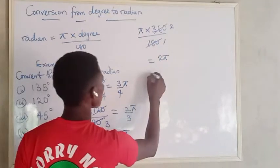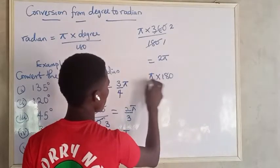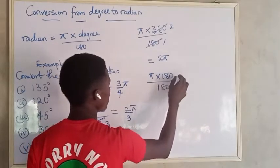Alright, then the next one is 180, so we have pi multiplied by 180 divided by 180 and that would be pi because 180 will cancel 180.